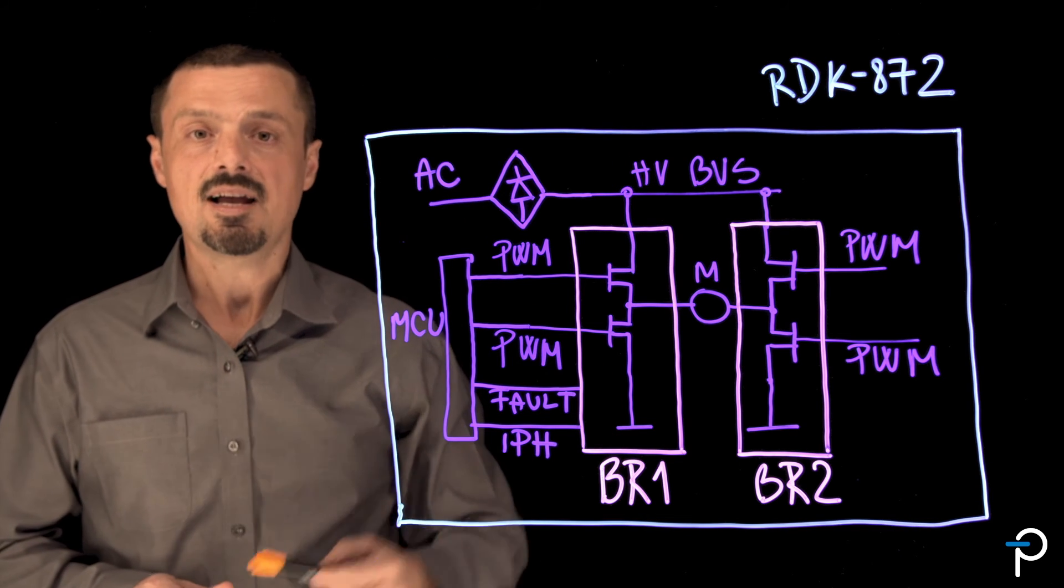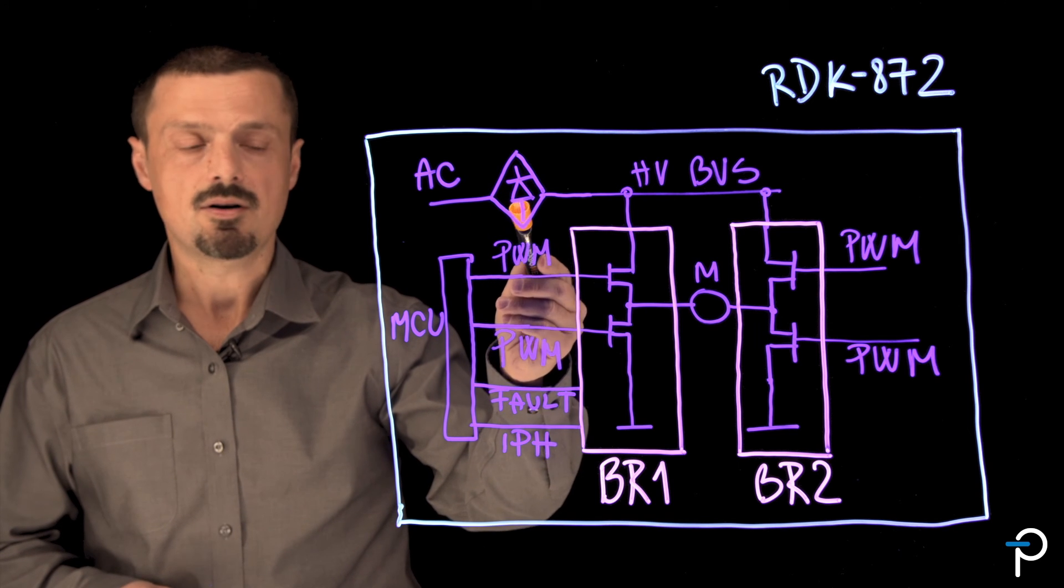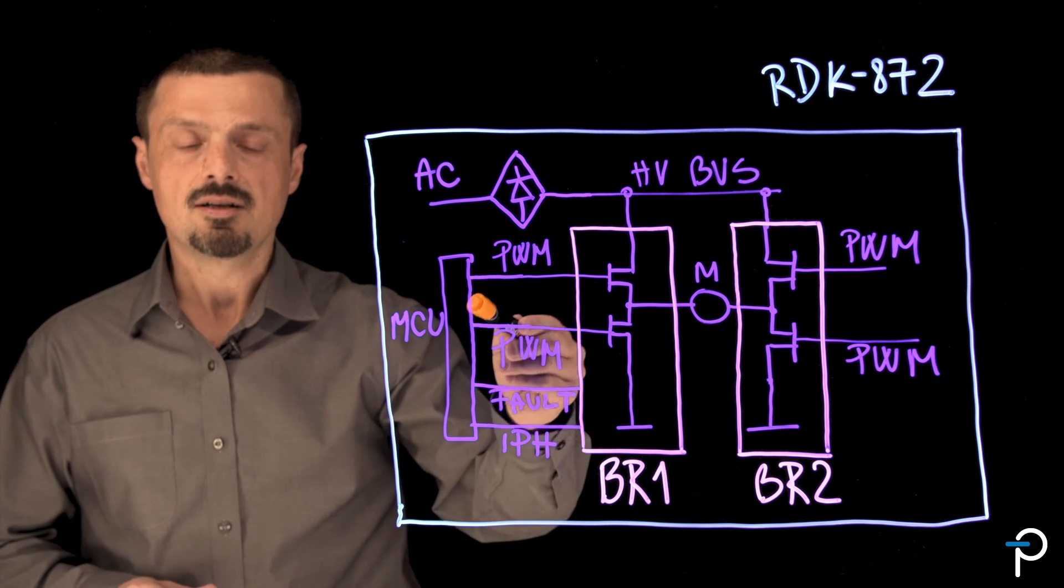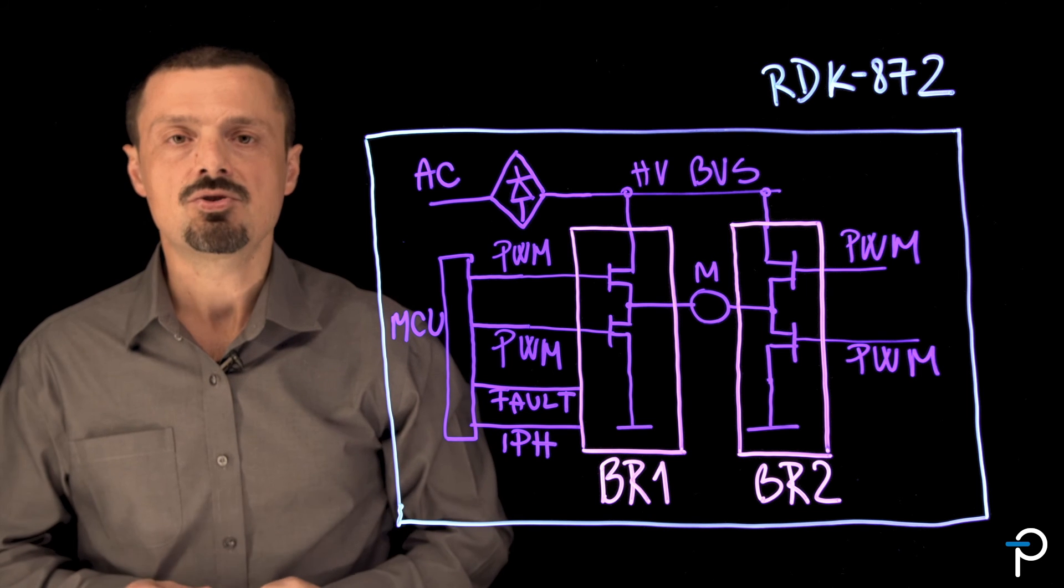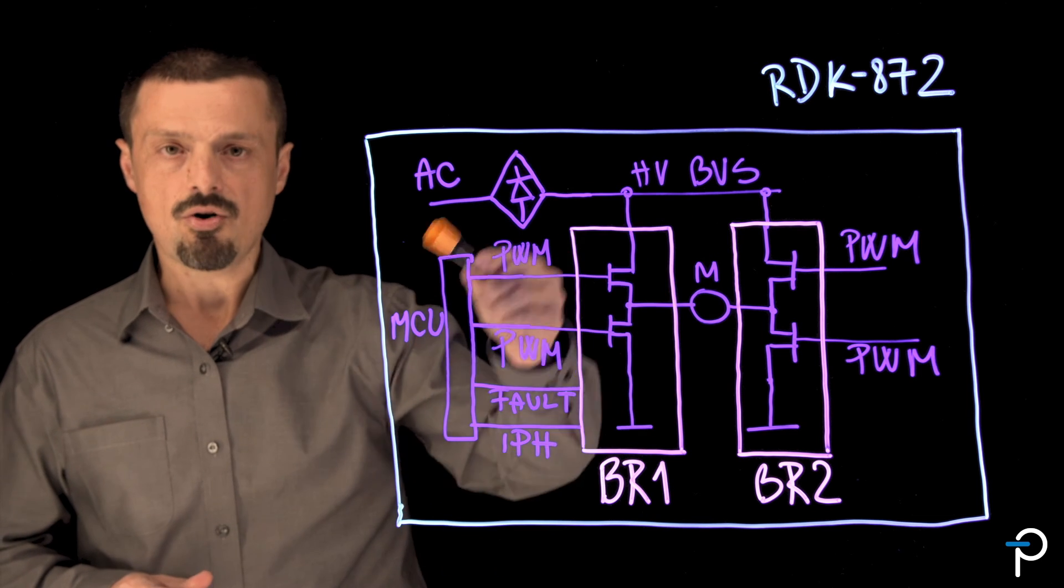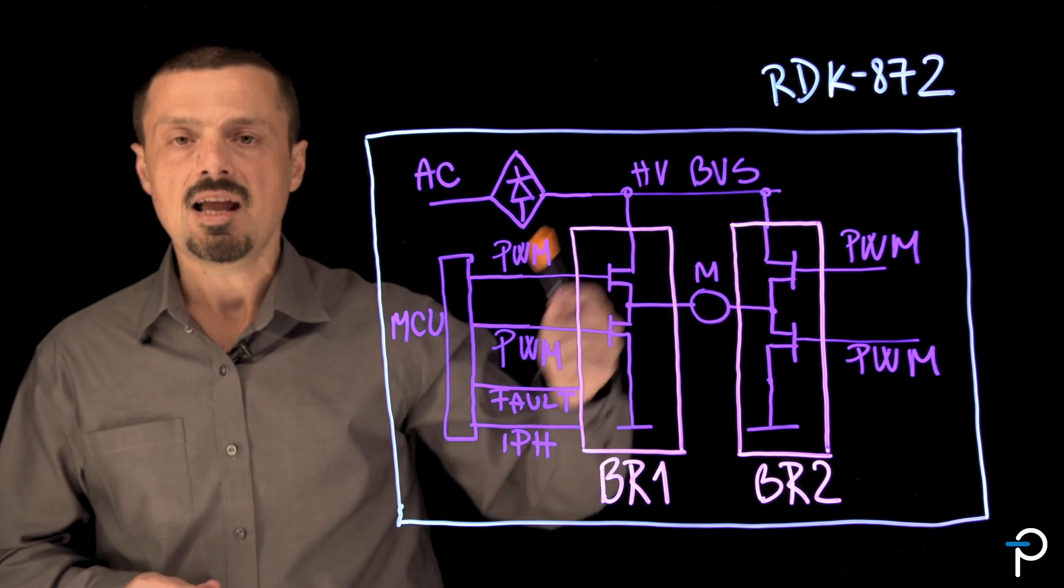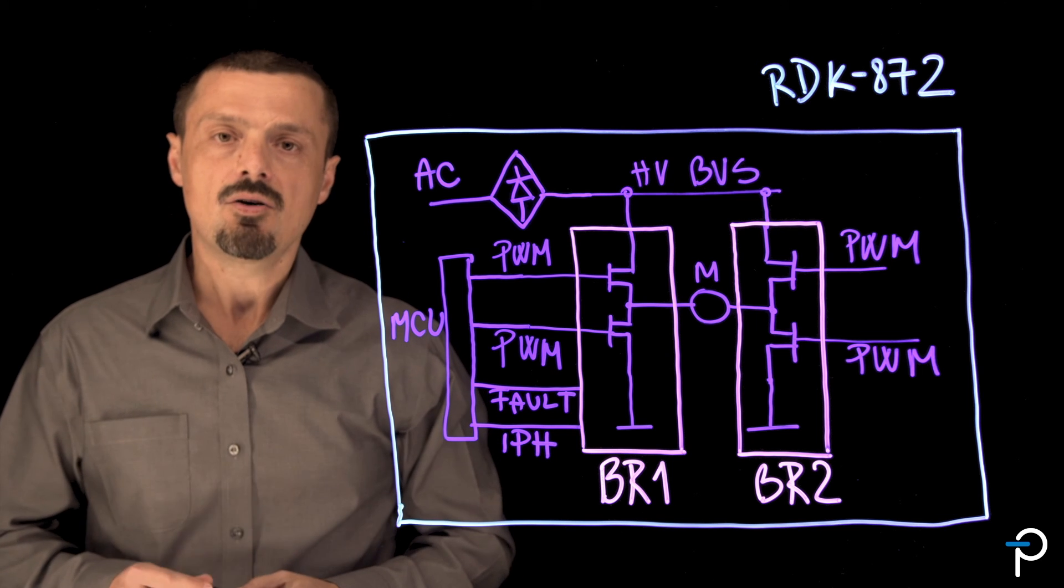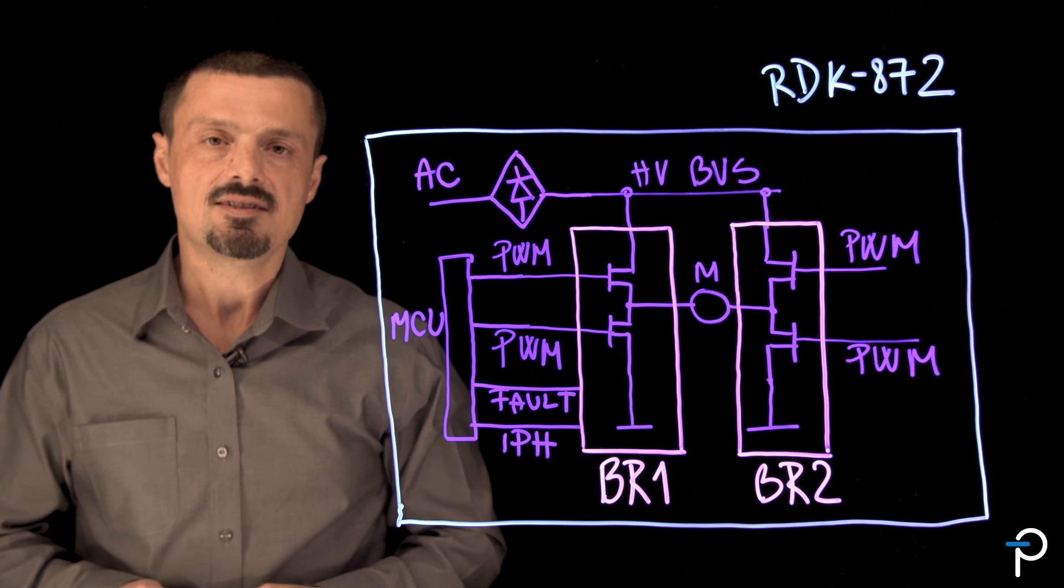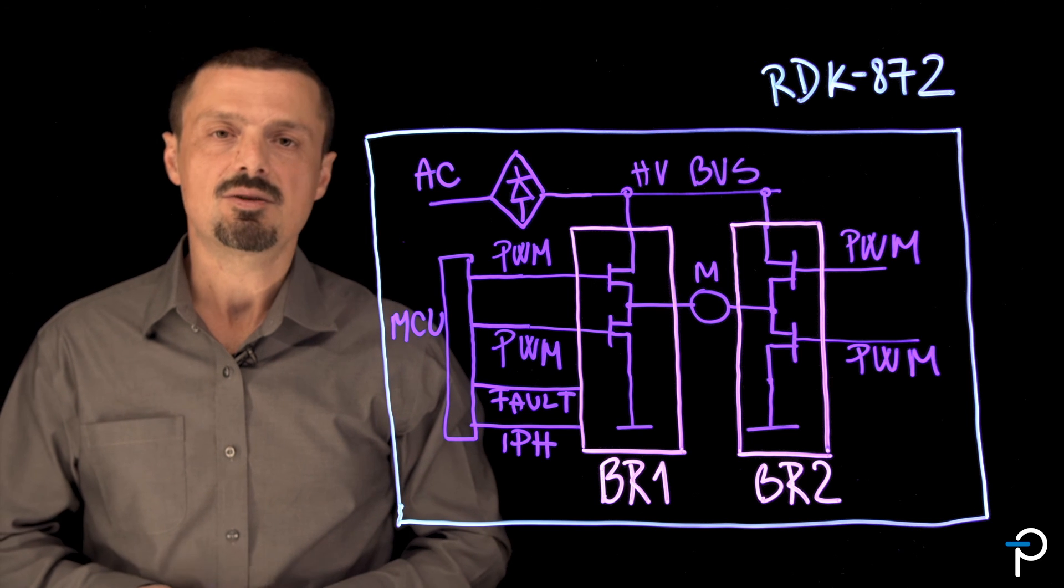I added to the design an AC rectification block and a connector to an external MCU daughter card. The new drawing represents RDK-872, one of the Power Integrations reference designs for single-phase BLDC motor drive.